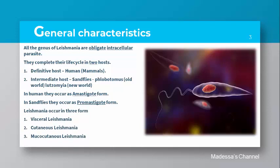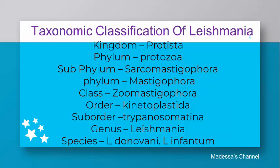Leishmania occurs in three forms: visceral Leishmania, cutaneous Leishmania, and mucocutaneous Leishmania — these are the sites on which the Leishmania parasites cause infections. Taxonomically, Leishmania donovani belongs to Kingdom Protoctista. Its phylum is Protozoa, subphylum Sarcomastigophora, class Mastigophora, order Kinetoplastida, suborder Trypanosomatina, genus Leishmania. Species include Leishmania donovani, L. infantum, L. aethiopica, L. tropica, and L. major.